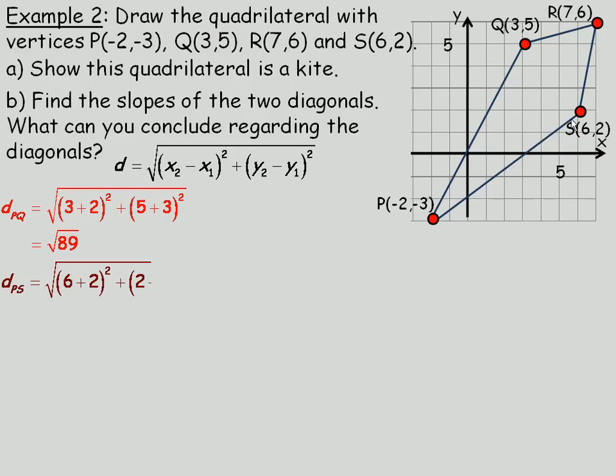Now we will next do PS. And so we will go 6, take away -2, or 6 plus 2 squared here. And 2, take away -3, which is the same as 2 plus 3 squared. So again we have 8 squared is 64. And this is 5 squared is 25. So 64 and 25 once again add to 89 underneath the root. So the length of PQ and PS certainly are the same. They are both root 89. No need to change these to decimals because they will just be the same decimals.